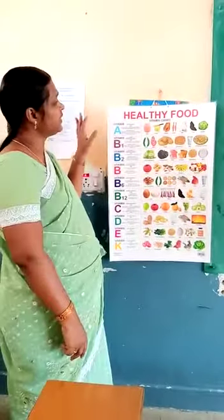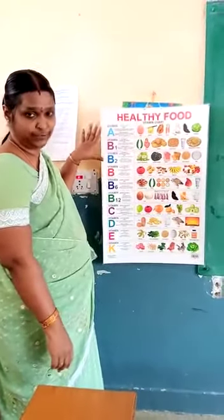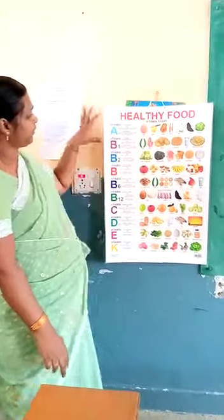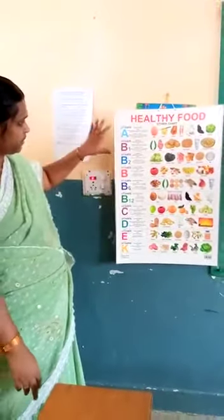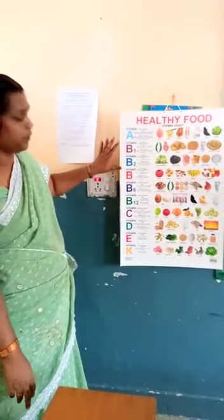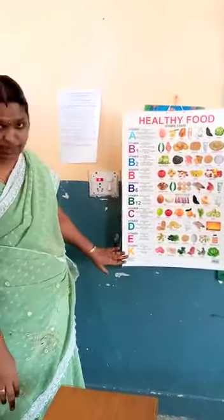Children, see this chart. This is a healthy food chart where you have all the vitamins: vitamin A, B, C, D, E and K.